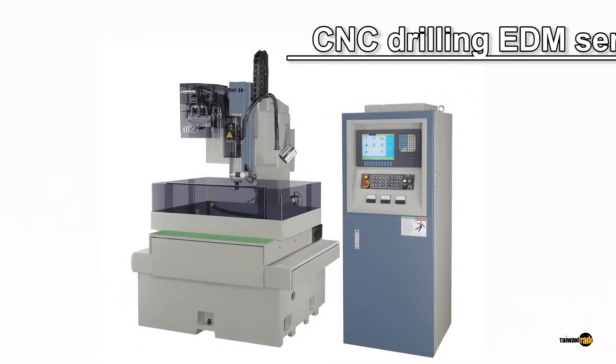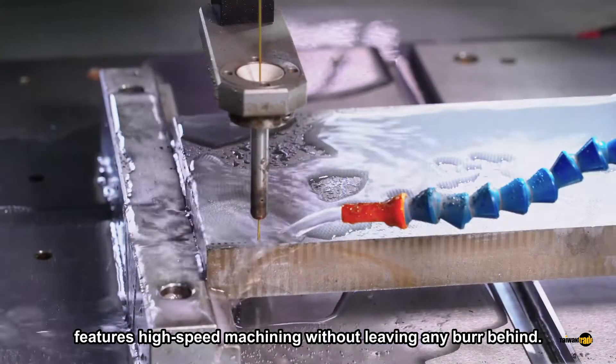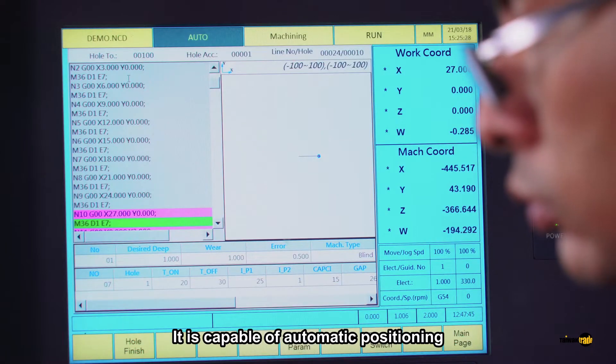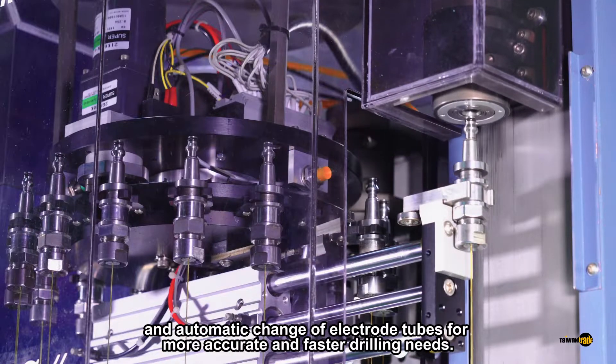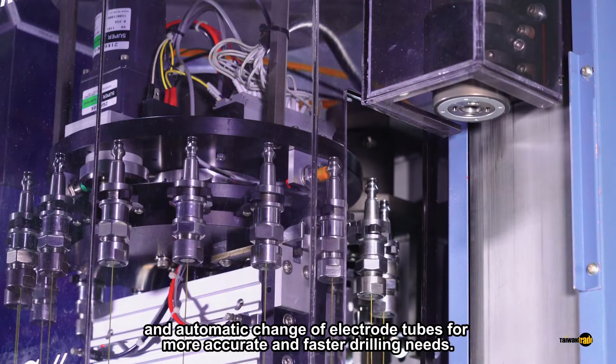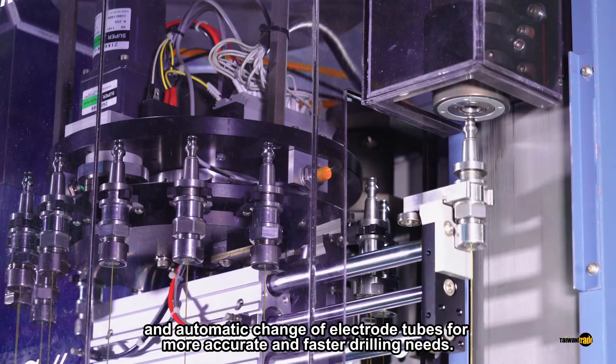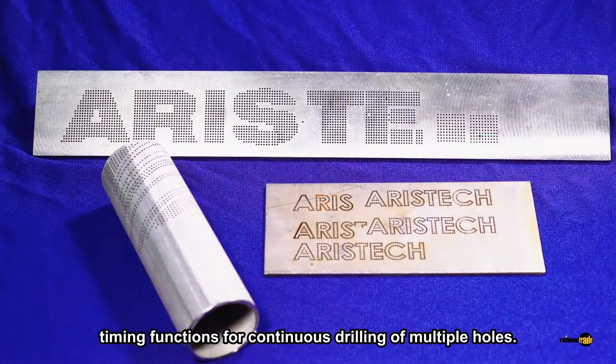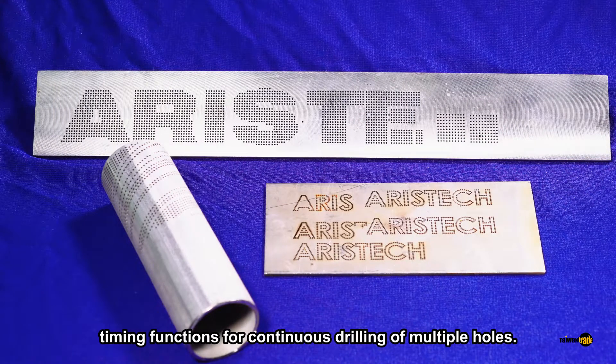CNC drilling EDM series features high-speed machining without leaving any burr behind. It is capable of automatic positioning and automatic change of electrode tubes for more accurate and faster drilling needs. It is also capable of defining drill depth based on built-in timing functions for continuous drilling of multiple holes.